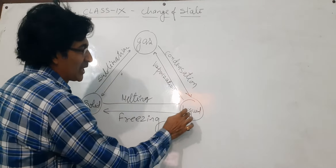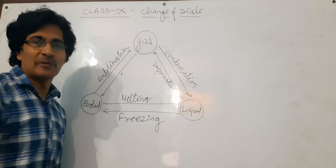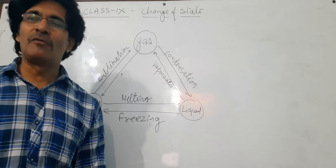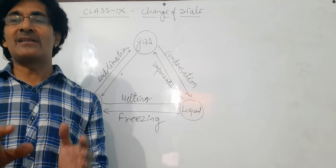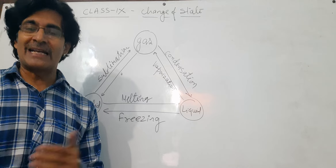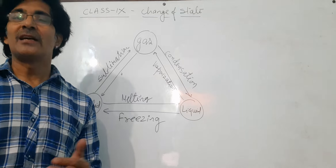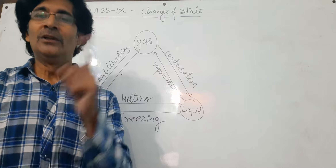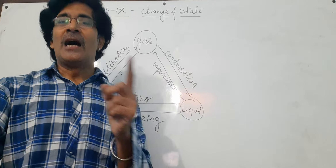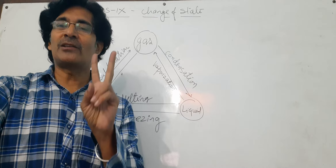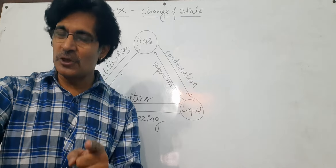One example I will give very easily — water molecules. Water molecules can change into solid as well as into vapors: ice, water, and vapors. That means all three states are present in water. If water converts to solid, that is freezing. If water molecules change into gaseous molecules, that is vaporization. This is one example of water, but we can take several examples.